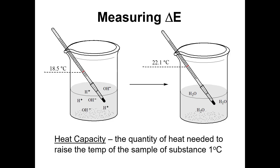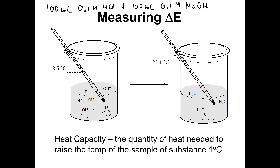So let's say we have a neutralization reaction — sodium hydroxide and hydrochloric acid, which is represented here on the slide. We have 100 milliliters of a 0.1 molar HCl solution, and we add 100 milliliters of a 0.1 molar solution of NaOH. This is a one-to-one relationship, it's going to be completely neutralized, and this reaction generates heat. The net ionic equation is simply H⁺ + OH⁻ → H₂O.